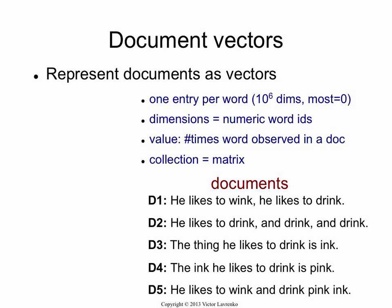Let's jump straight into this. Suppose you have a collection of documents — these are our documents — and we're going to build a little index out of that. These are all the terms that we're going to index, and the terms are going to serve as the heads for our lists. This is going to be our indexing unit. We're going to store the positional occurrence information of each one of those terms.